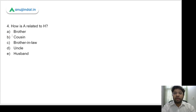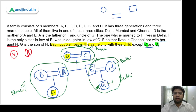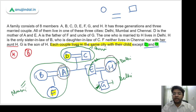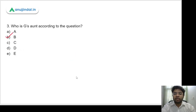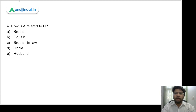Question 4: How is A related to H? A is E's brother, and E is H's husband, so A is the brother-in-law of H. The correct answer is option C — brother-in-law.